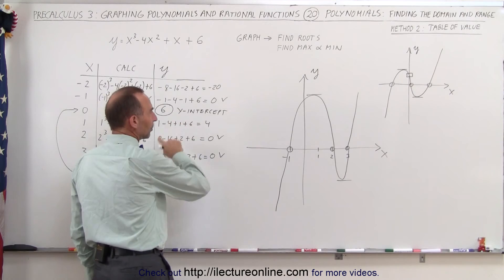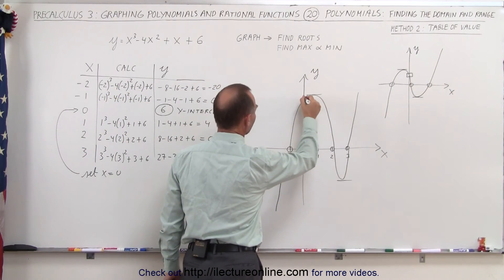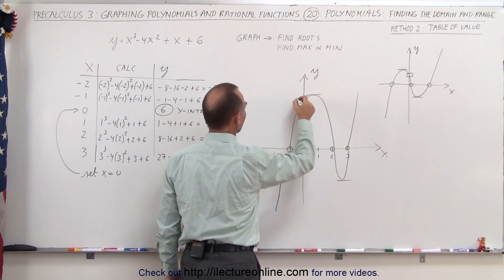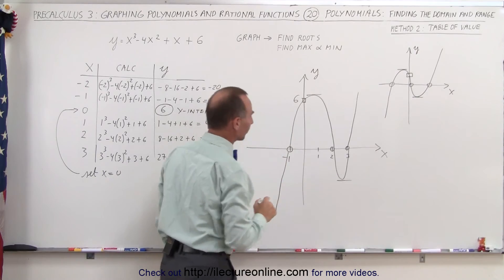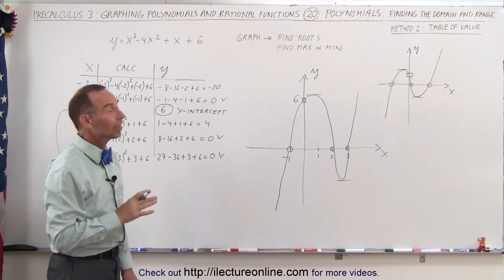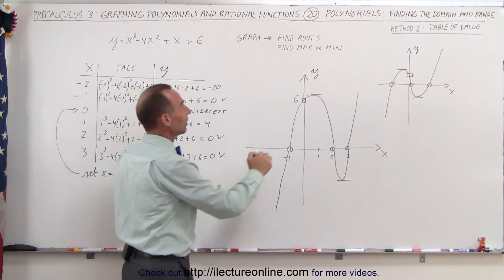So the y-intercept is right up here at this value right here. So here's the y-intercept where y is equal to 6. Now, notice in this case, do we need to find the max and the min on this graph?